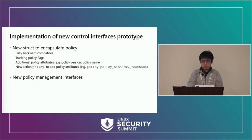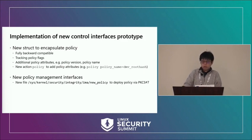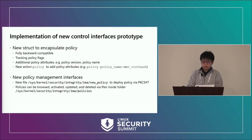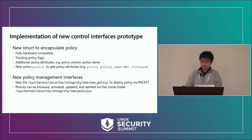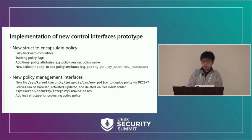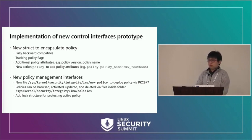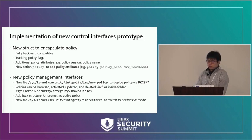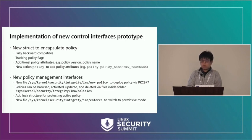We changed the policy management interfaces by creating a new file inside the security file system so we can deploy policy via PKCS7. We also created a new folder inside the security file system for administrators to manage policies. Because we have multiple policies, we added a new pointer protected by RCU that points to the currently active policy structure, guaranteeing only one policy is active at a time. Finally, we introduced a permissive switch inside the security file system, protected by memory barriers, just as implemented in SELinux and IPE.